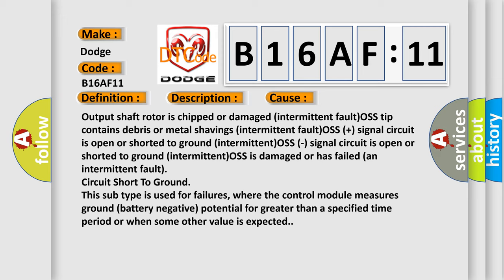Intermittent fault circuit short to ground: this subtype is used for failures where the control module measures ground battery negative potential for greater than a specified time period or when some other value is expected.